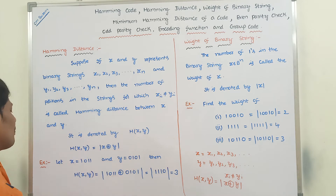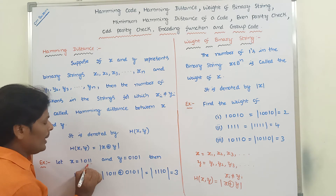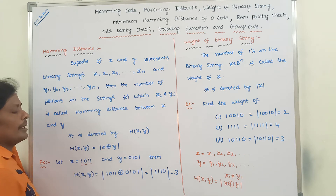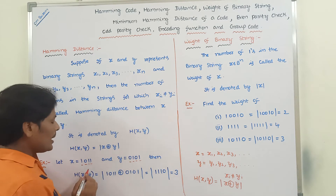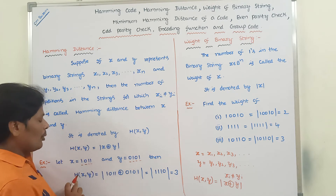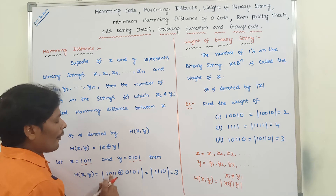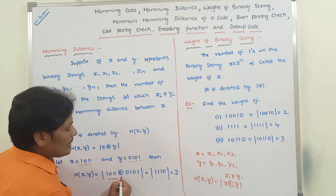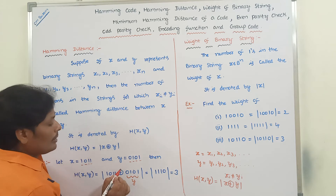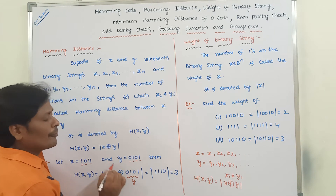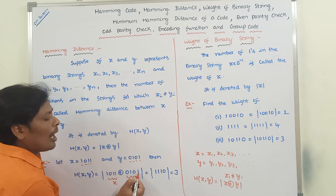For example, let x equal to 1011, where the bits are x1, x2, x3, and x4. Y contains the bits y1, y2, y3, y4. The Hamming distance of x and y is denoted by h(x, y), which is defined as mod of x XOR y. In the XOR operation, between corresponding bits, we perform the XOR operation. Here 1 XOR 1 is 0. Next, 1 XOR 0 is 1.